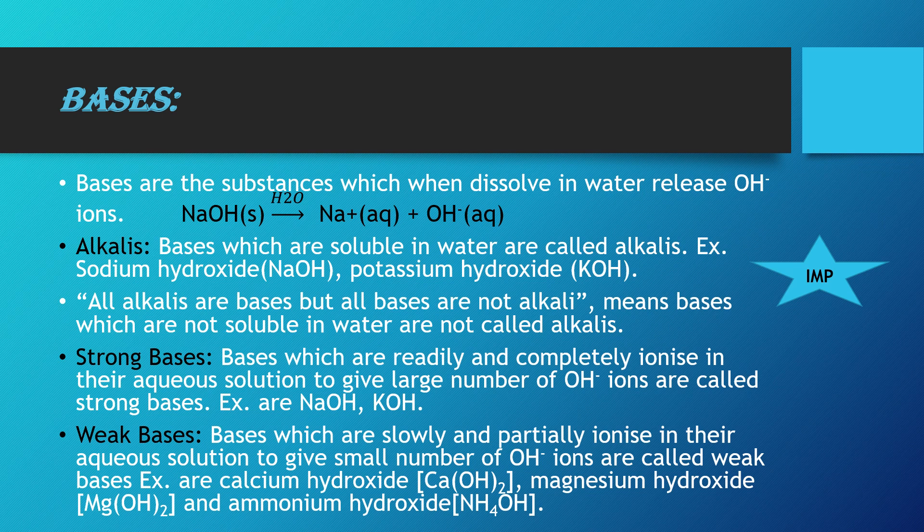The second term is alkalis. Bases which are soluble in water are termed as alkalis. For example, NaOH and KOH — always remember these two as bases or alkalis. NaOH is sodium hydroxide, KOH is potassium hydroxide. There is a very important statement: all alkalis are bases, but all bases are not alkalis. This means that only the bases which are soluble in water are called alkalis. Bases which are not soluble in water are not called alkalis.